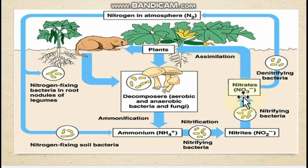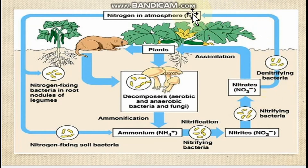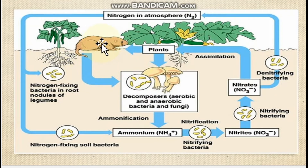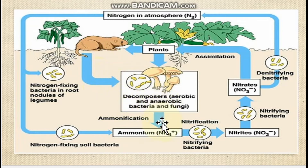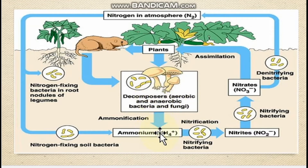A problem arises when nitrates are acted upon by denitrifying bacteria, also present in the soil, which convert these nitrates back into atmospheric nitrogen — making them unavailable to plants. Similarly, when animals excrete, that excretion also contains ammonia. When animals and plants die, they are decomposed by aerobic and anaerobic bacteria and fungi, converting matter back into ammonia, and the whole process continues.